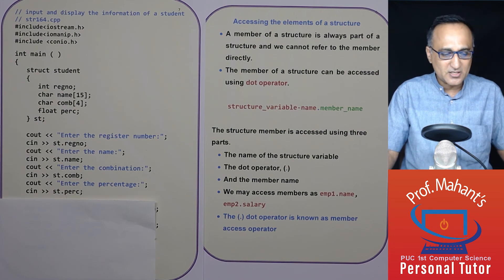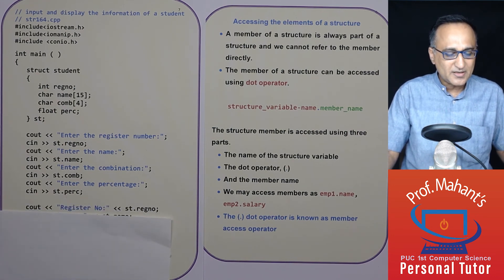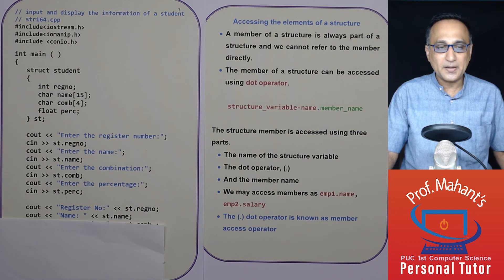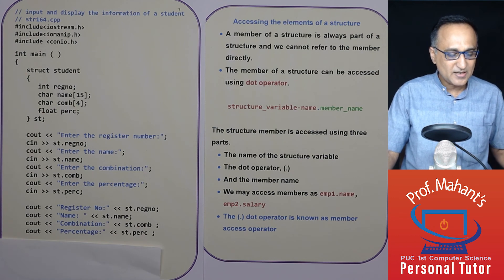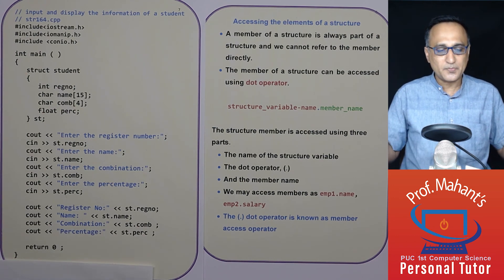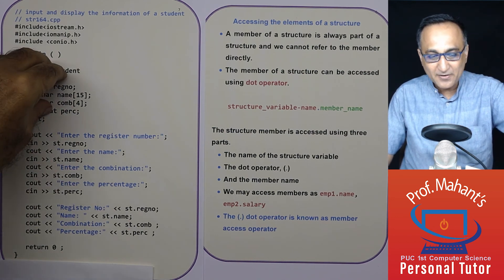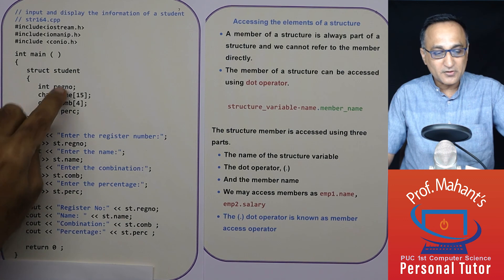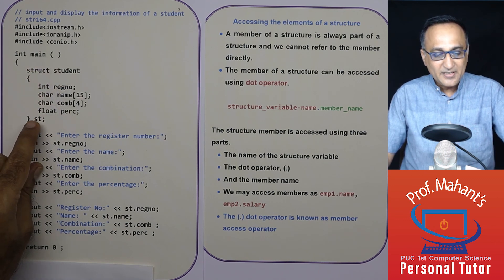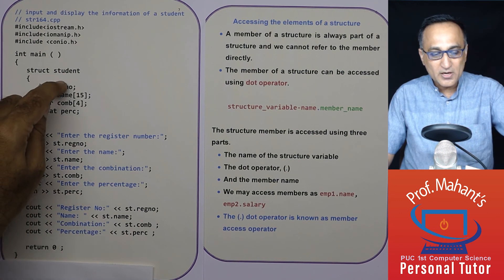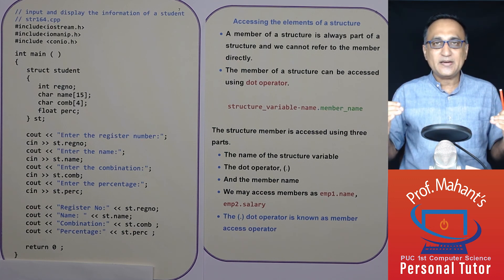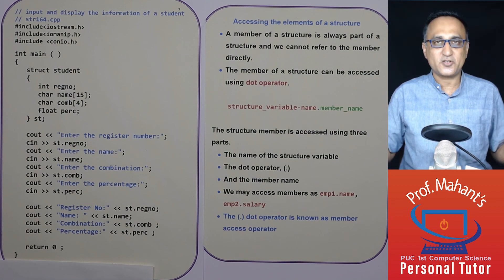To print the members, similarly use the dot operator. To print the register number, use cout with ST.registernumber. For name, use ST.name. For combination, use ST.COMB. For percentage, use ST.PERC. Finally, return zero ends the program. I first defined the structure prototype or model, then declared a variable ST of this model, and into ST — which has memory and the following members — I am storing the data. I hope this gives you an idea of how to read data into a structure and how to print data from a structure.